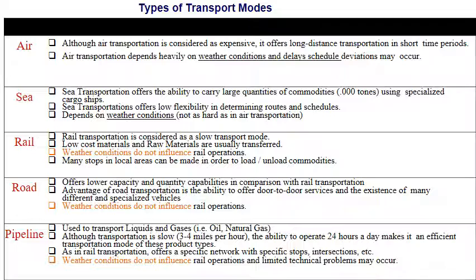Rail transportation is generally slow and carries raw materials. There are many stops in local areas to load and unload commodities — loading means putting products inside the rail car, and unloading means handling products from the rail into the warehouse.